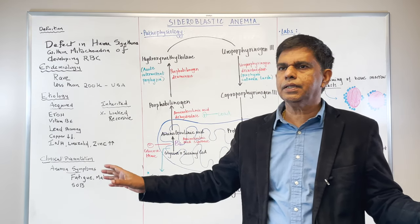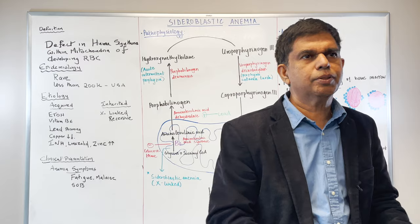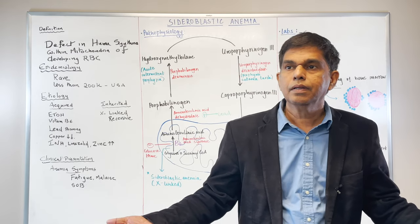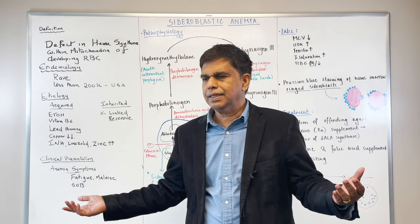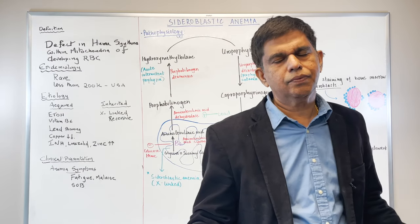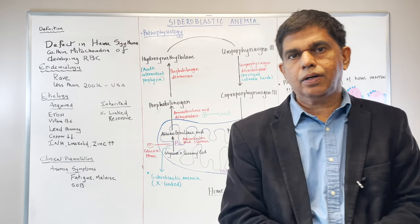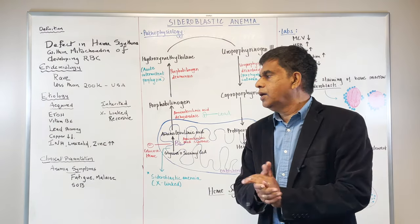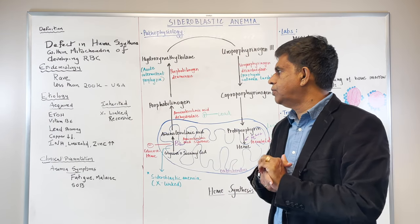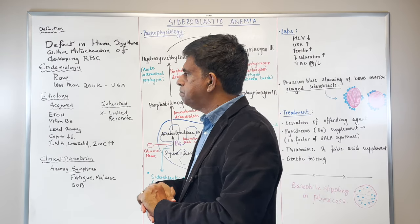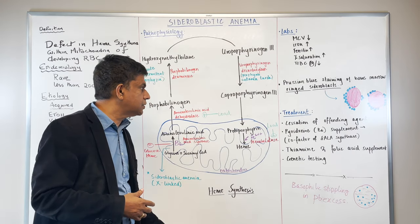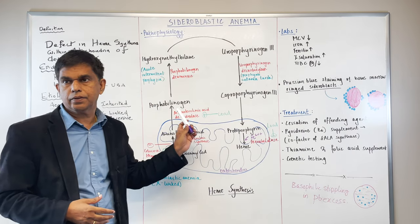Clinical presentation: any type of anemia can present with fatigue, malaise, shortness of breath, palpitations, and in severe cases even chest pain. Now the most important thing is the metabolism — what happens in heme synthesis — that's what we need to know.